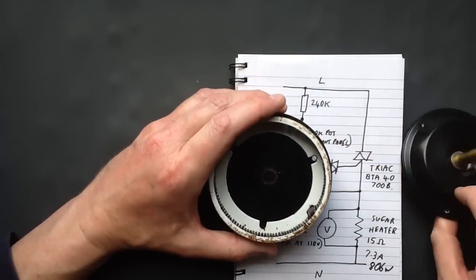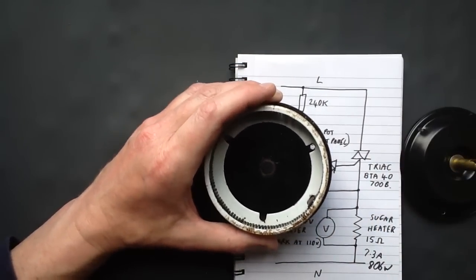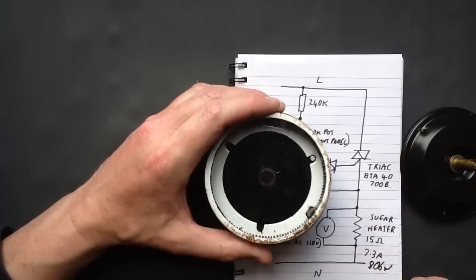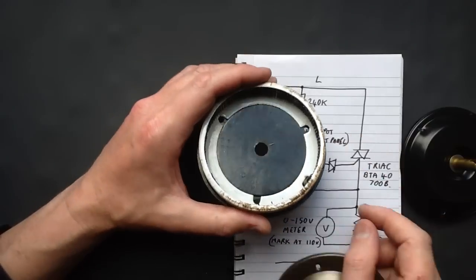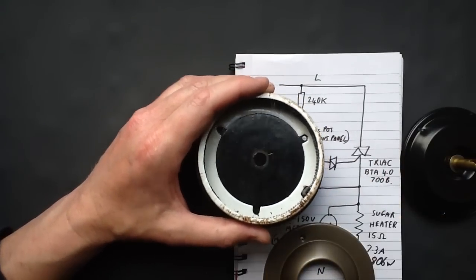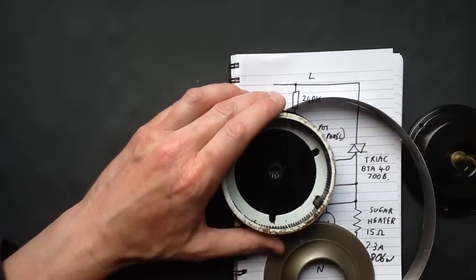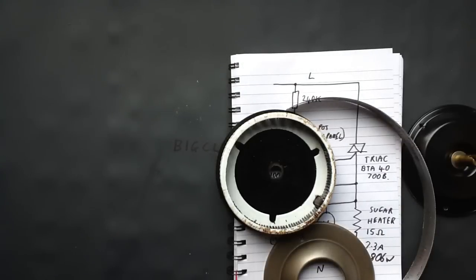But yeah, so if you're ever wondering just what's inside a candy floss, one of these spinning heads, that's basically it. It's a little metal frame, the heating element, and then the perforated mesh to stop the sugar getting out until it's molten. All very interesting and very tasty too.